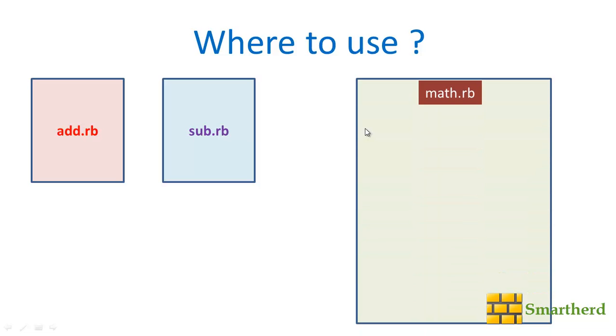Suppose we are having the Ruby file as math.rb. In this math.rb you want to do operations like add.rb or sub.rb or addition or subtraction. So for that you have to incorporate this add.rb into this and sub.rb into this. For that you don't have to write the whole program here again. You just have to incorporate these two files here using the require_relative or require statement.